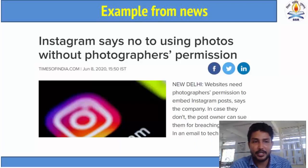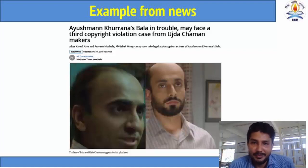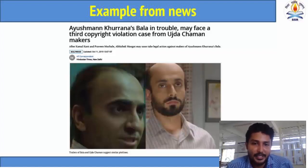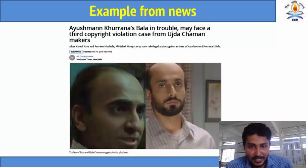Let us take another interesting example from the Bollywood movie Bala. The news cutting says: 'Ayushmann Khurrana's Bala in trouble — it may face a third copyright violation case from Ujda Chaman.' The movie that came on the right-hand side came earlier, and Bala came later. The story and script writing all come under intellectual property. So other persons cannot use intellectual property without the permission of the owner or creator.